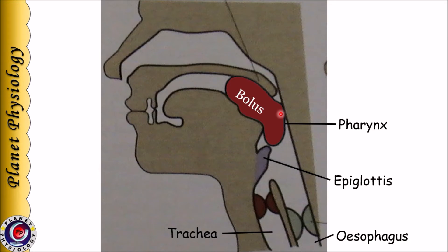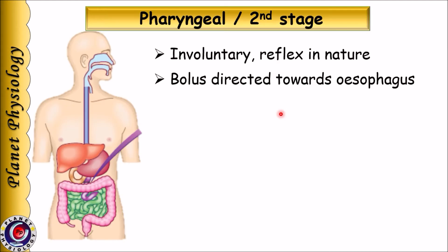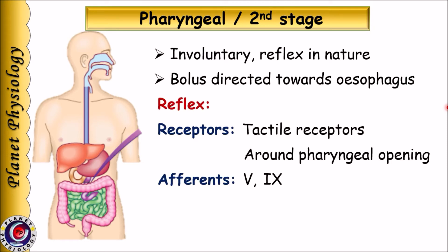Now let us start with the second stage of deglutation — the pharyngeal stage. It is involuntary and reflex in nature. In this stage, bolus is directed towards the esophagus, covering transmission from the oral cavity to the esophagus. The receptors are the tactile receptors located around the pharyngeal opening. Impulses from these receptors are transmitted by the 5th and 9th cranial nerves to the deglutation centre.